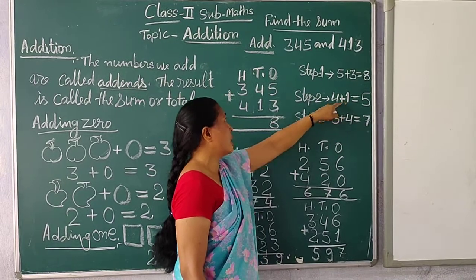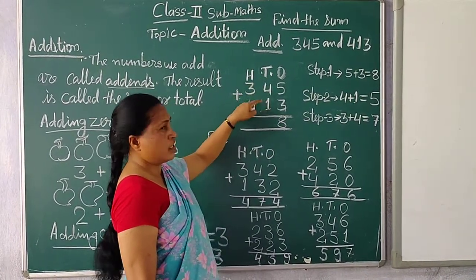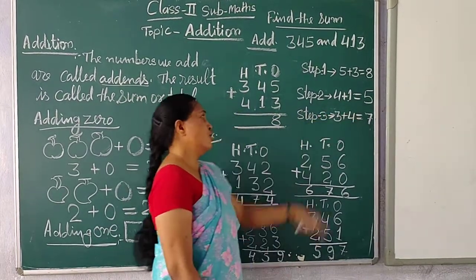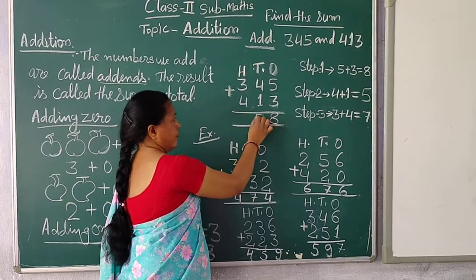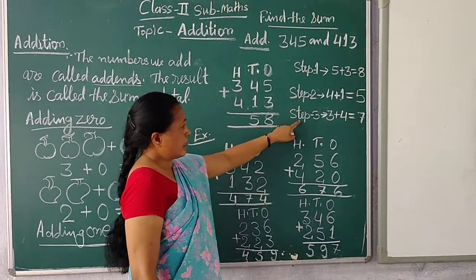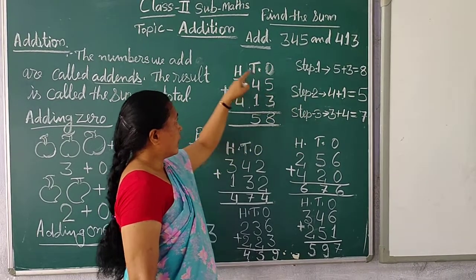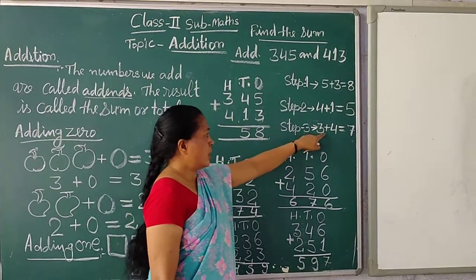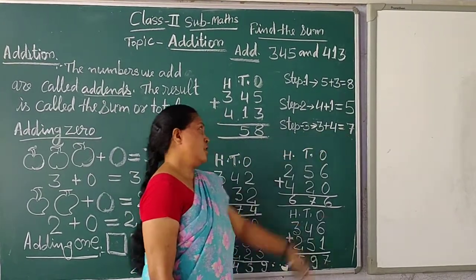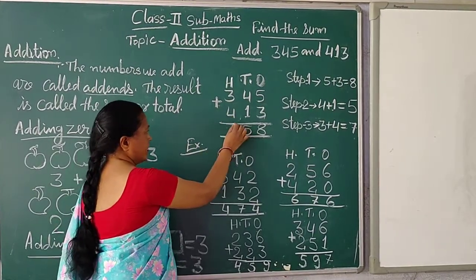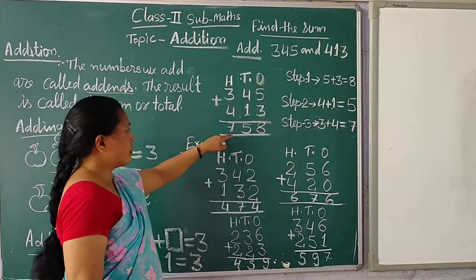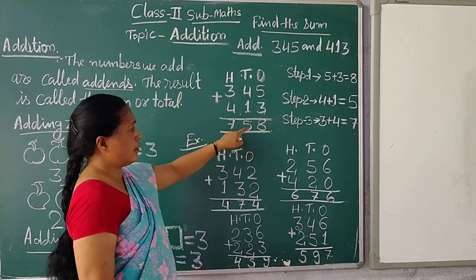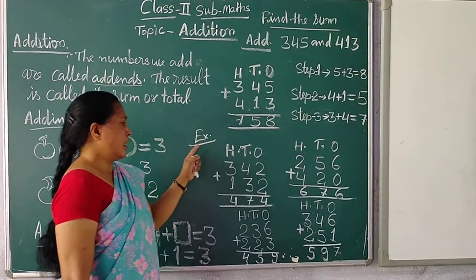Second step: the tens place is four plus one. Four plus one equals five, so we write five. Step three: the hundreds place is three plus four. Three plus four equals seven, so we write seven in the hundreds place. So this is the total of the number: seven hundred fifty-eight.